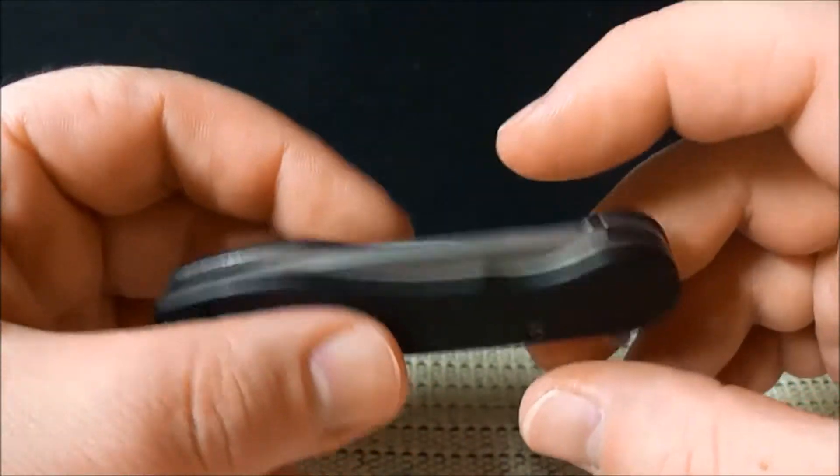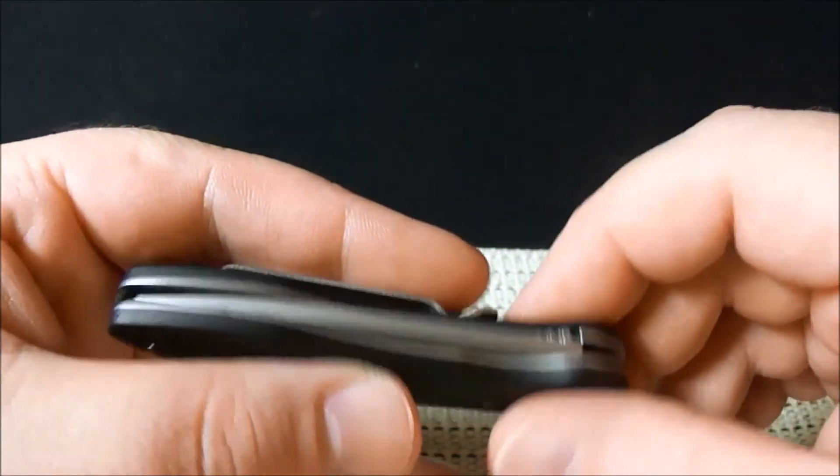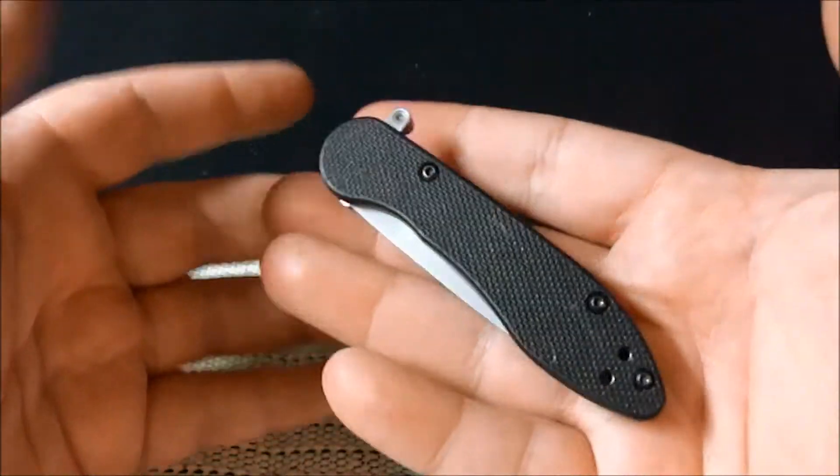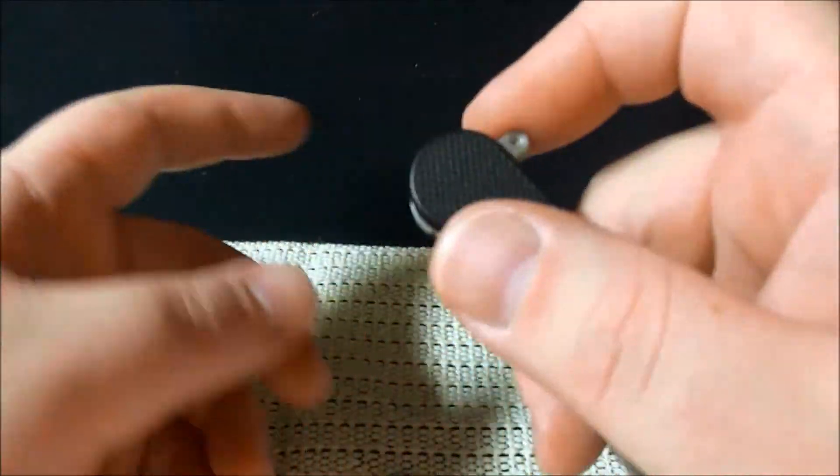This is the Kershaw Overdrive or OD2. The first one is like twice the size of this one. This is a tiny little booger here. It's about as long as my middle finger. So tiny little knife.